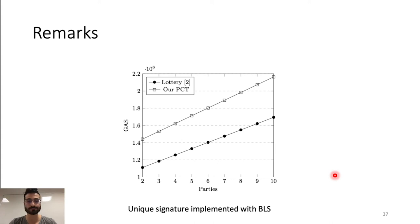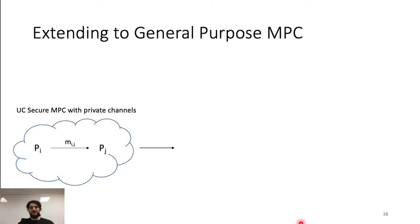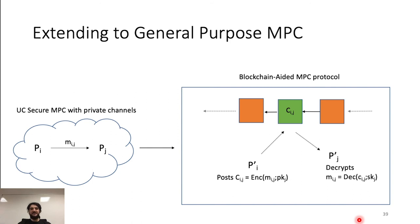Hello, I'm Vincenzo Botta. Now I'm going to present a general compiler that, starting from an MPC protocol, generates an equivalent protocol that runs completely on blockchains. The output of the compiler is the blockchain-enabled protocol pi prime. To simulate the private channel of the original protocol pi, in pi prime the messages are encrypted using a public key encryption scheme. For each party pi in the original protocol, we define an equivalent party pi prime. For each message MIJ from party pi to party pj, pi prime will encrypt MIJ to obtain an encrypted ciphertext CIJ and publish CIJ to the blockchain. Then party pj prime downloads CIJ and uses the associated private key to decrypt it, obtaining MIJ.